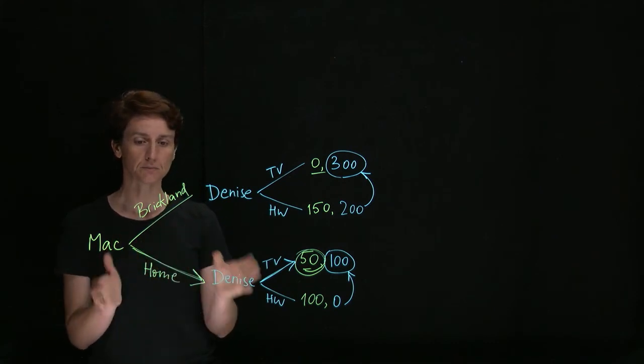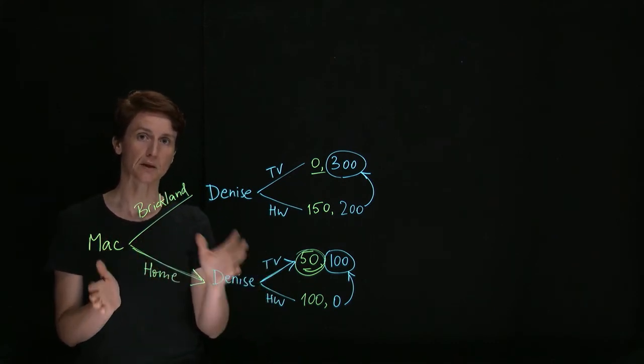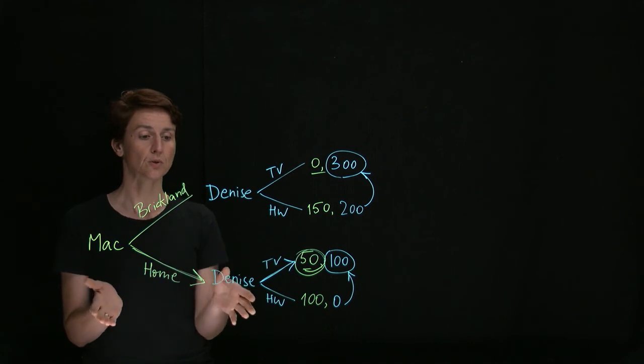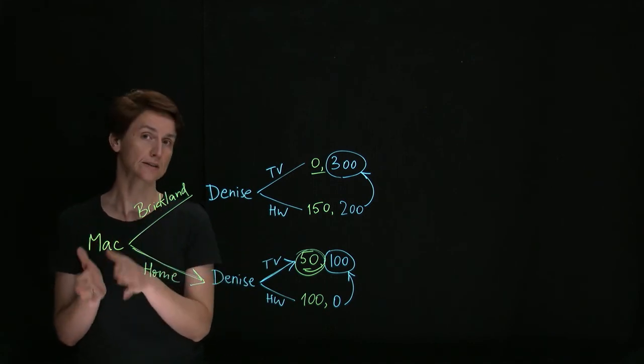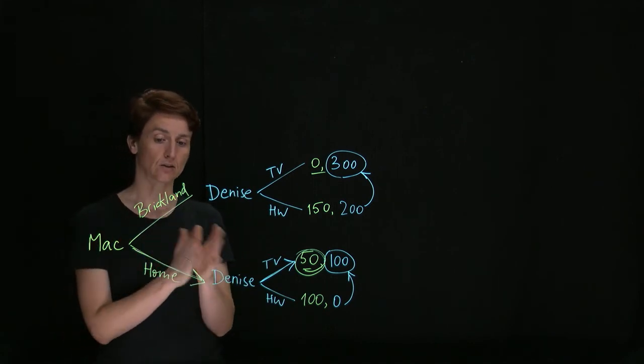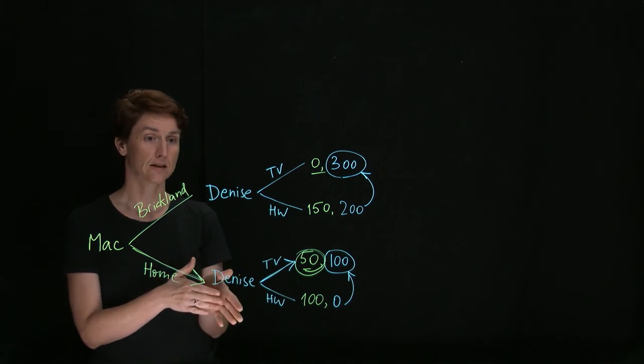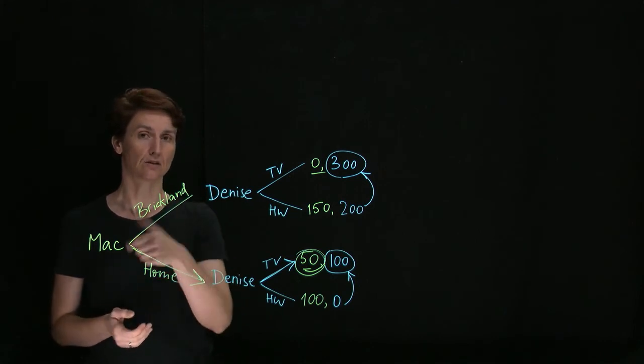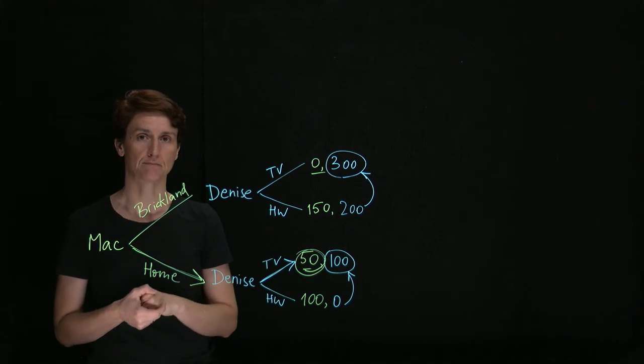The other way we could solve this particular problem is by switching the order. Suppose that Denise could do her homework on Saturday and they could go to Brickland on Sunday. The order of movement would be reversed and let's see what would happen then.